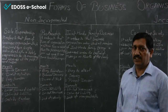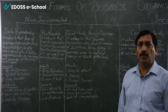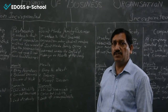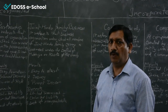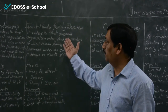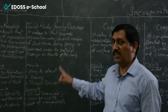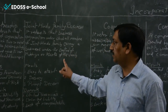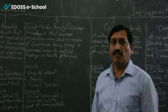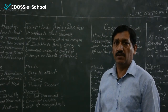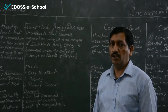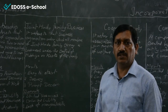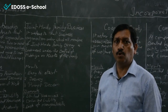Joint Hindu family business — as its name shows, it should be from a single family only, and three generations can participate. It refers to that business organization under which all members of a joint Hindu family carry on business under the control of the head of the family. The head is known as Karta, and the other members are known as co-partners.